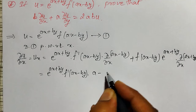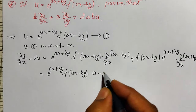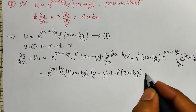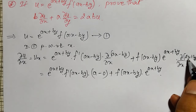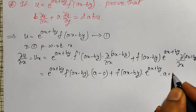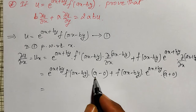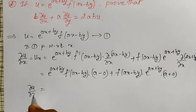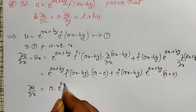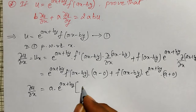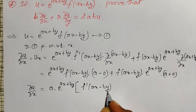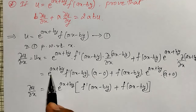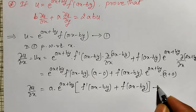Now, ax minus by — 'by' is totally constant when differentiating partially with respect to x, therefore that term is 0. Plus f of ax minus by as it is, times e raised to ax plus by as it is, and derivative of ax plus by with respect to x becomes a plus 0, that is a. While simplifying, I can take a and e raised to ax plus by common. Therefore, ∂u/∂x equals a into e raised to ax plus by, multiplied by f dash of ax minus by plus f of ax minus by. Let me call this as equation number one.